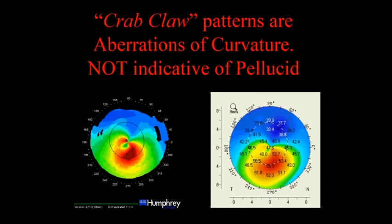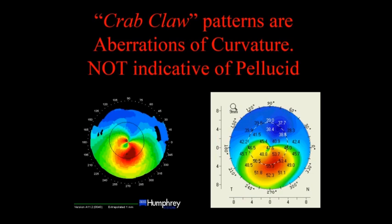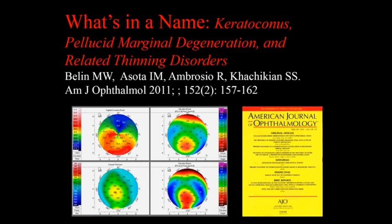We published a paper, 'What's in a Name? Keratoconus, Pellucid Marginal Degeneration, and Related Thinning Disorders,' going over the distinction between these conditions. We went back to published articles claiming to show pellucid, asked authors to send raw Pentacam data, reanalyzed it, and they all agreed these were not true cases of pellucid. To properly diagnose pellucid, you must rely on Scheimpflug images and open your corneal thickness map all the way to limbus-to-limbus.